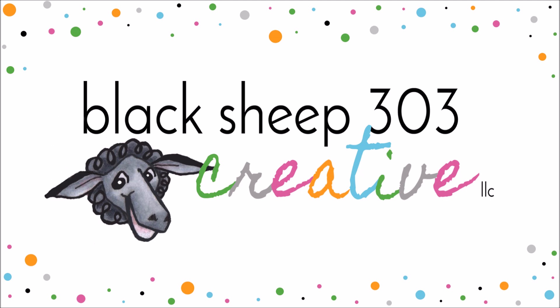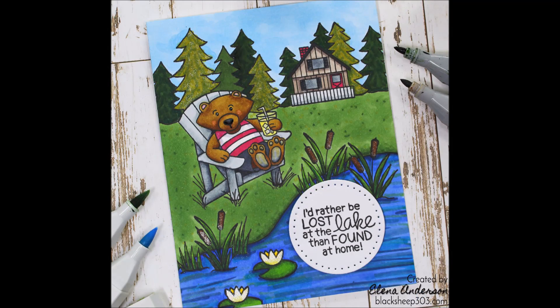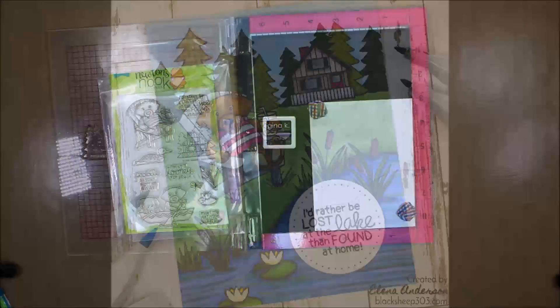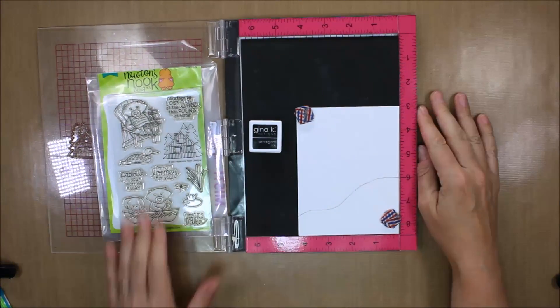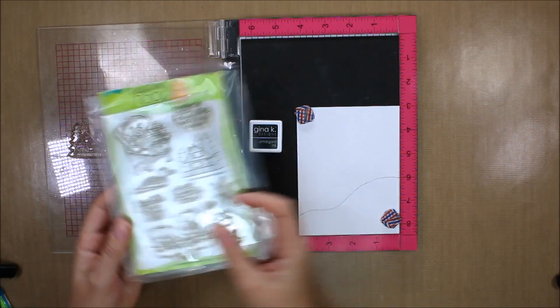Hi, this is Elena with Black Sheep 303 Creative and my project today is a detailed look at how I've created this scene and colored it and shaded it using Spectrum Noir markers. The video is kind of long but if you want more detail on how I do this, hopefully this will be helpful.